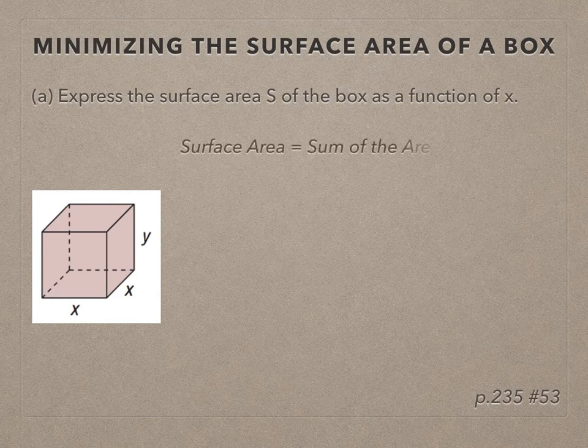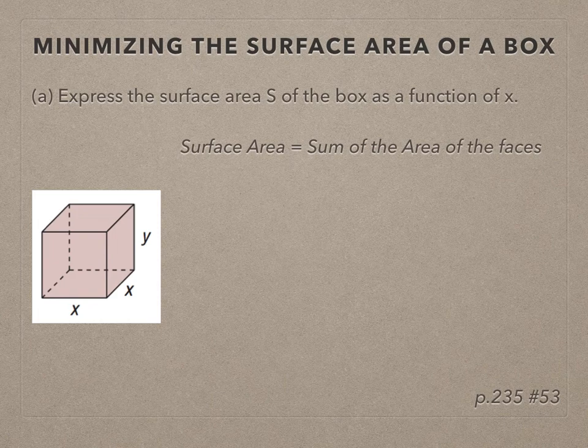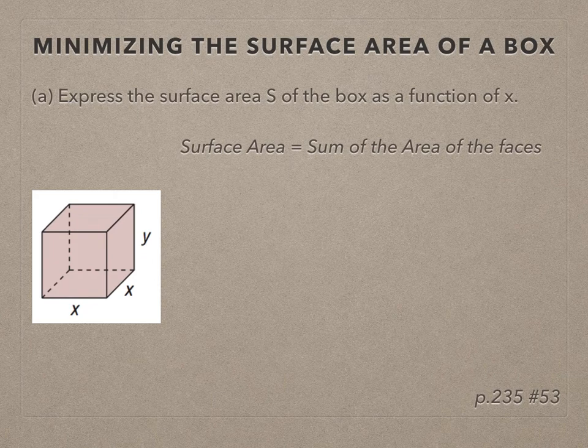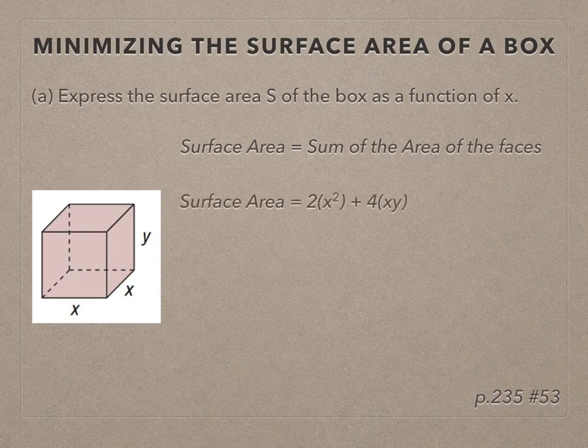Surface area is the sum of the area of the faces. We have six faces on this box. The bottom and the top are congruent, right? So the area of those respectively are x squared and x squared. And then we have four rectangles that form the walls of the box. The area of those rectangles is xy. So my formula is 2x squared plus 4xy.